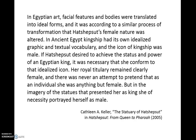Let's look at perhaps why that image might have changed. This is a paragraph from Kathleen Keller. She tells us that in Egyptian art, facial features and bodies were translated into ideal forms, and it was according to a similar process of transformation that Hatshepsut's female nature was altered. In ancient Egypt, kingship had its own idealized graphic and textual vocabulary, and the icon of kingship was male. This is a really important concept — we're going to talk about how Hatshepsut adopts the iconography of a male king.